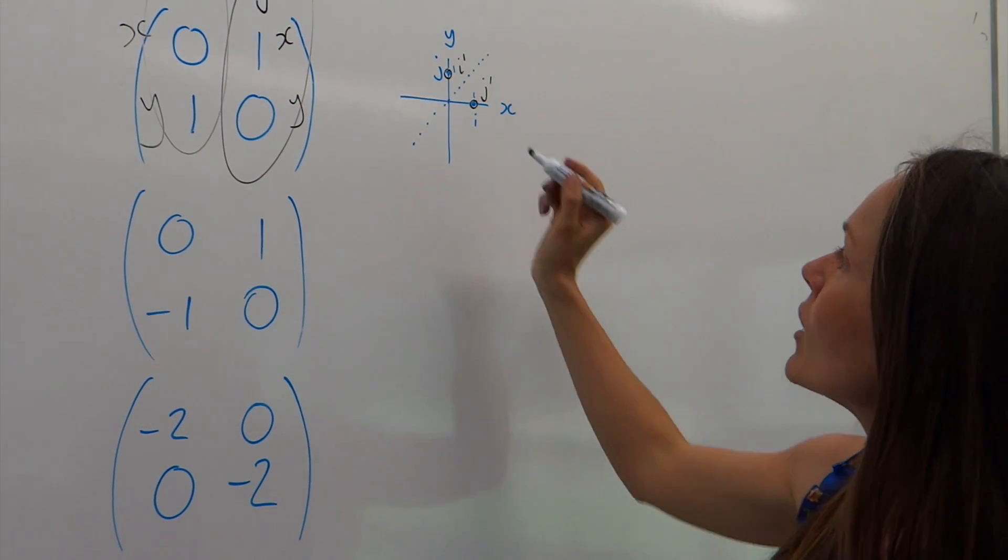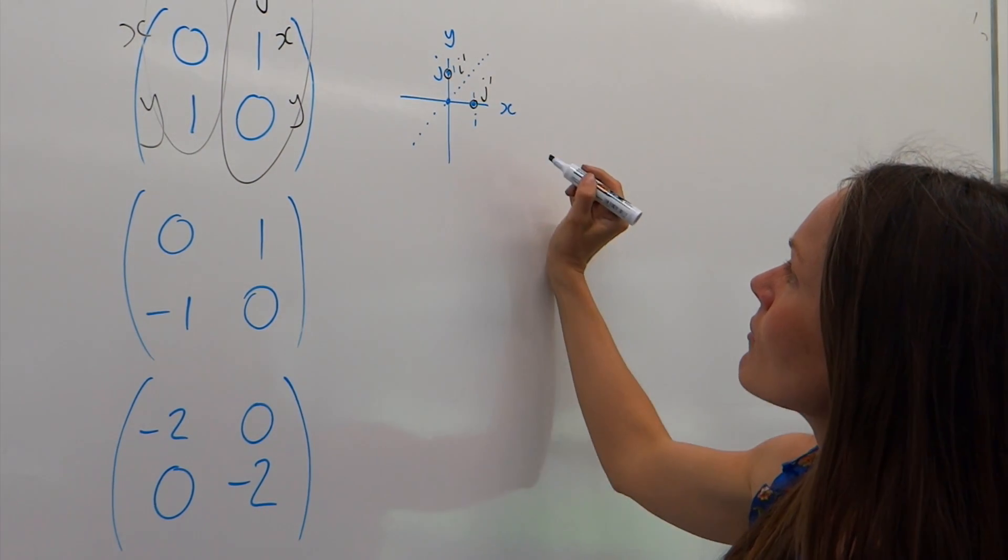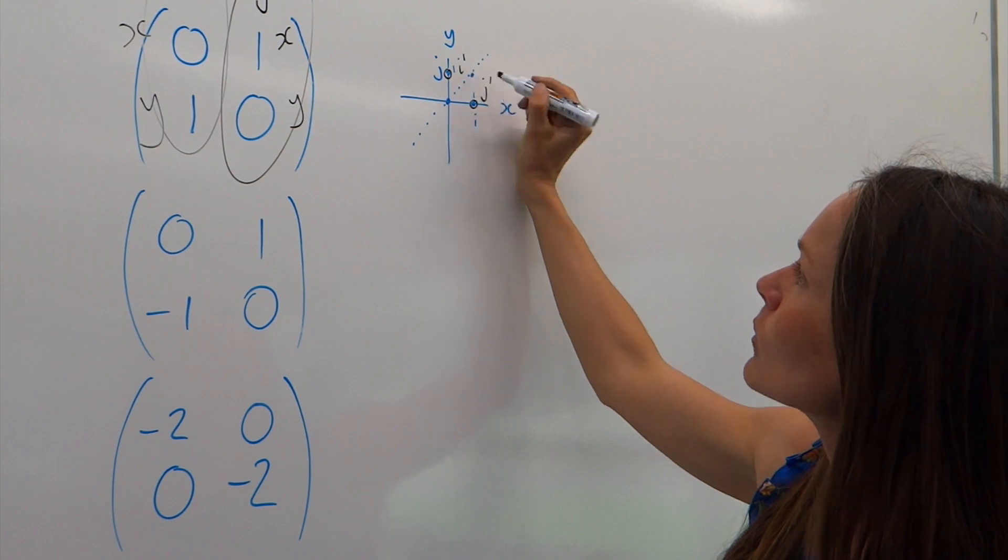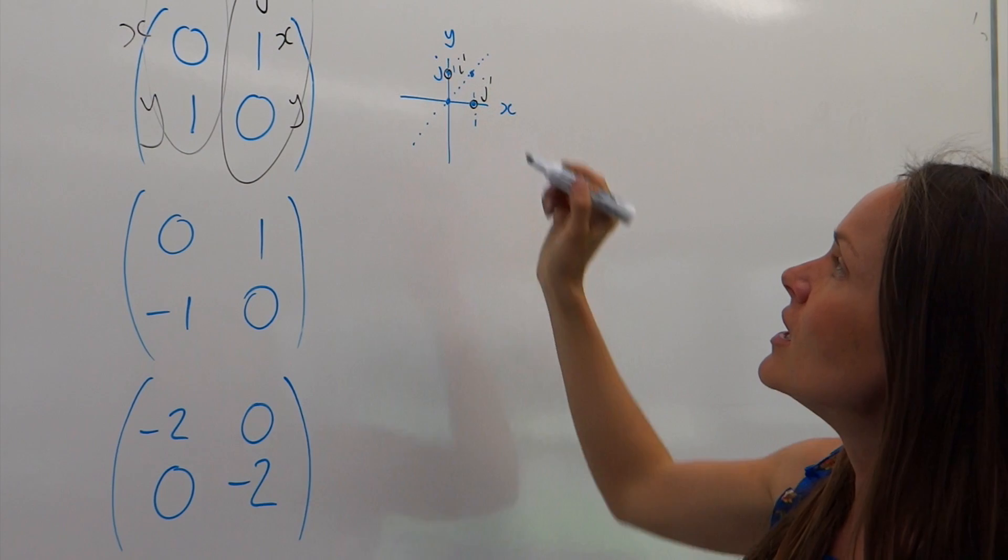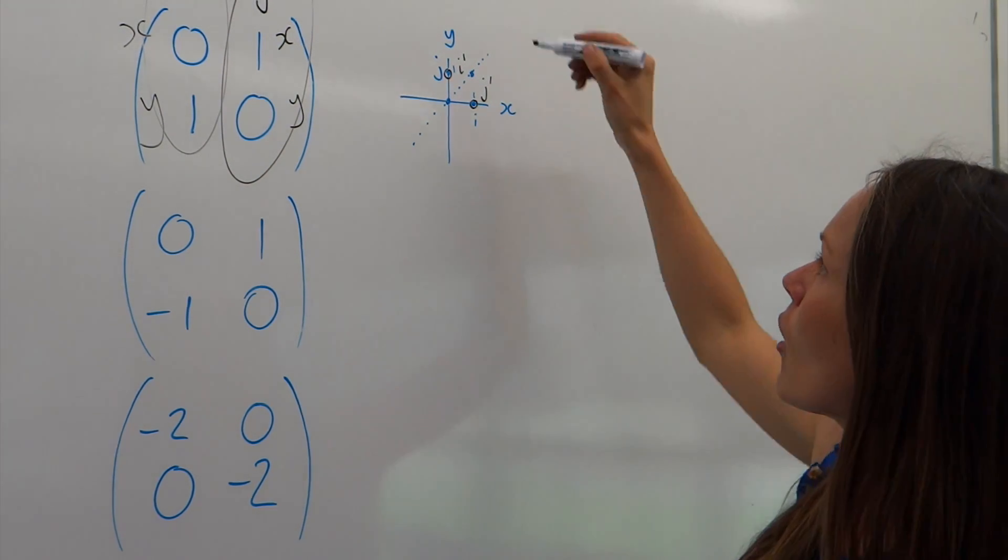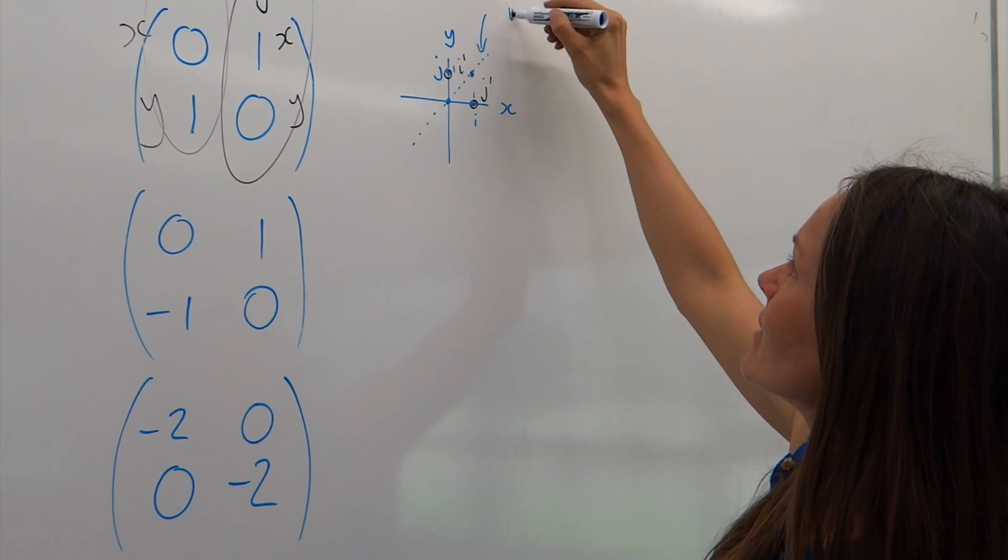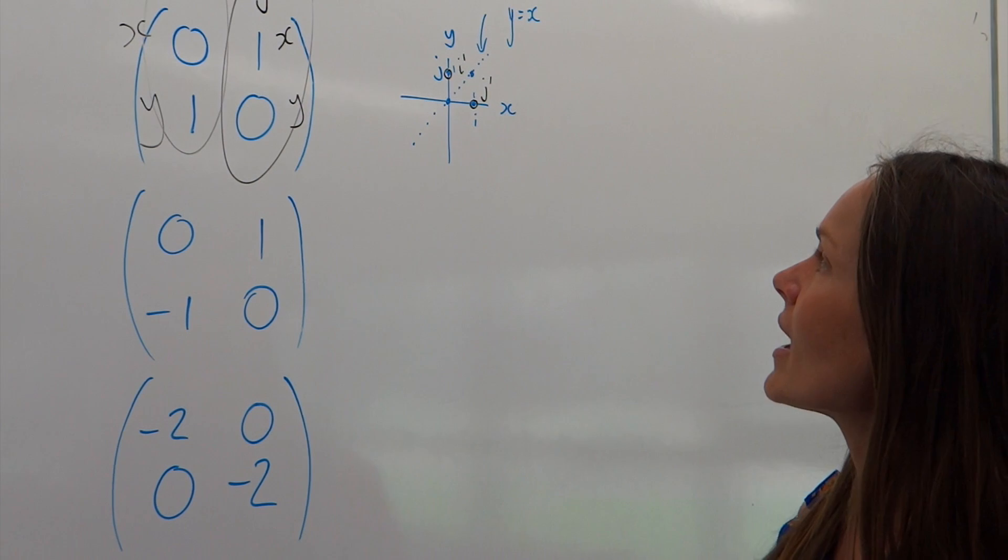You can see that i and j have both been reflected in that line. So, we know this point here is zero, zero, and this point is one, one. Because remember, here it was in line with one, and here it's in line with one. So, the equation of that dotted line there is y equals x.